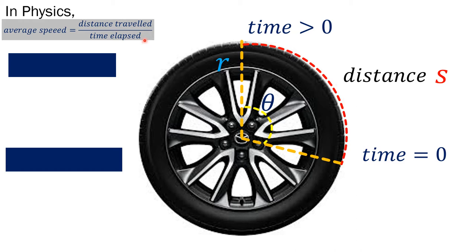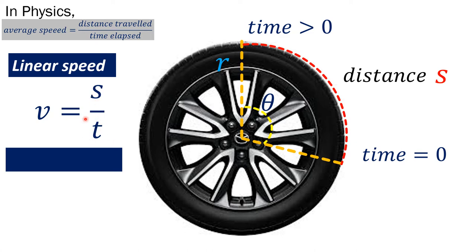In trigonometry, we refer to linear speed when talking about the distance covered s over time. This v is the speed, which is equal to the distance covered over time elapsed — consistent with what physics tells us. Now, what if we are interested in the angles? What if we are interested in the revolutions — how many revolutions can be done at a particular time?